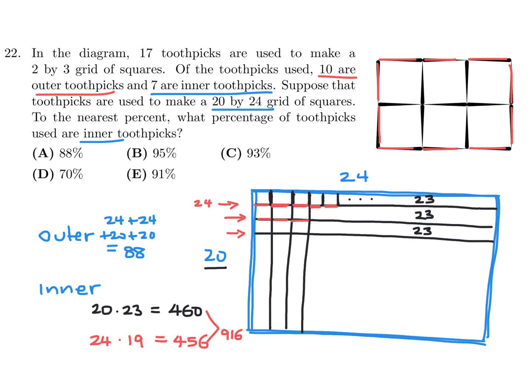The percentage would be inner toothpicks over total. Inner is 916, and the total is 916 plus 88, which equals 1004. So that is 916 over 1004, and that's approximately 91%. Therefore, number 22, the answer is E.